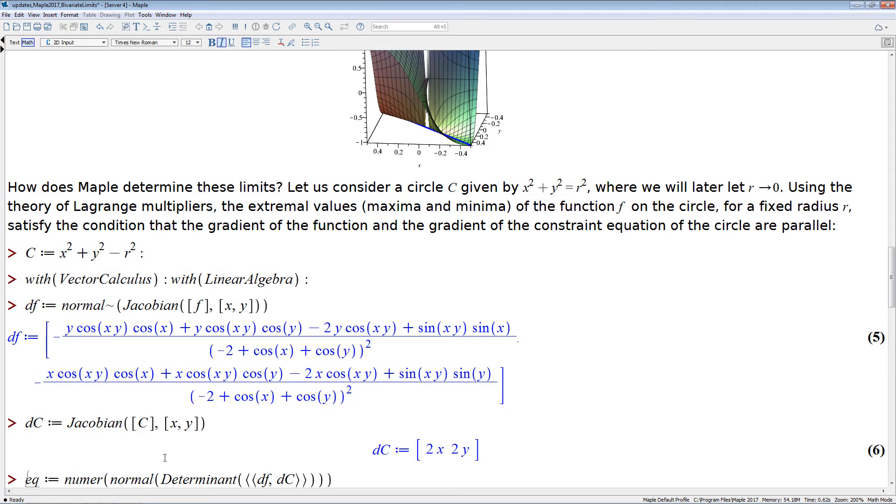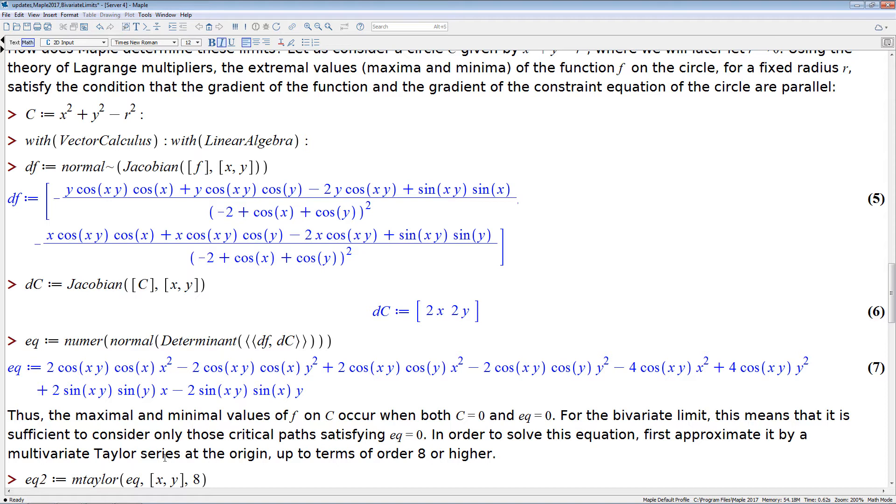So that gives us an equation, which we see here, and the maxima and minima of the function f on the circle, x squared plus y squared minus r squared, are given when both the equation of the circle is satisfied and this equation that we just determined is satisfied.